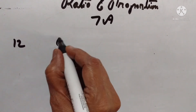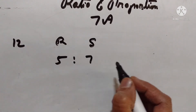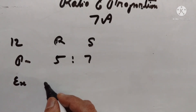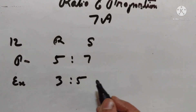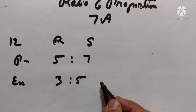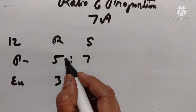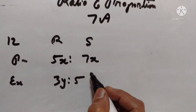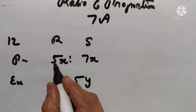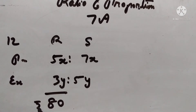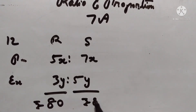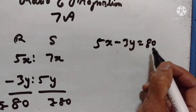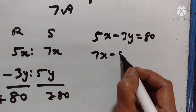12th problem. The monthly pocket money of Ravi and Sanjeev are in the ratio 5 to 7. Their expenditures are in the ratio 3 to 5. If each saves Rs. 80 every month, find their monthly pocket money. Let the pocket money of Ravi be 5x and Sanjeev be 7x. The expenditure of Ravi be 3y and expenditure of Sanjeev be 5y. So 5x minus 3y is equal to Rs. 80, and 7x minus 5y is equal to Rs. 80.